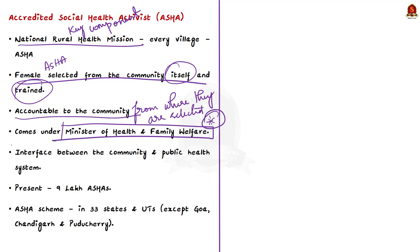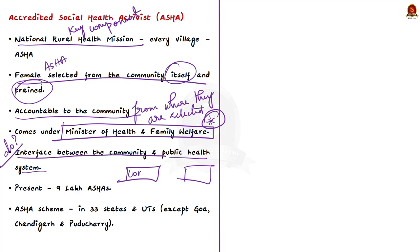ASHA workers are trained to work as an interface between the community and the public health system. At present, there are over 9 lakh ASHA workers and the scheme is in place in 33 states and union territories, except Goa, Chandigarh, and Puducherry.